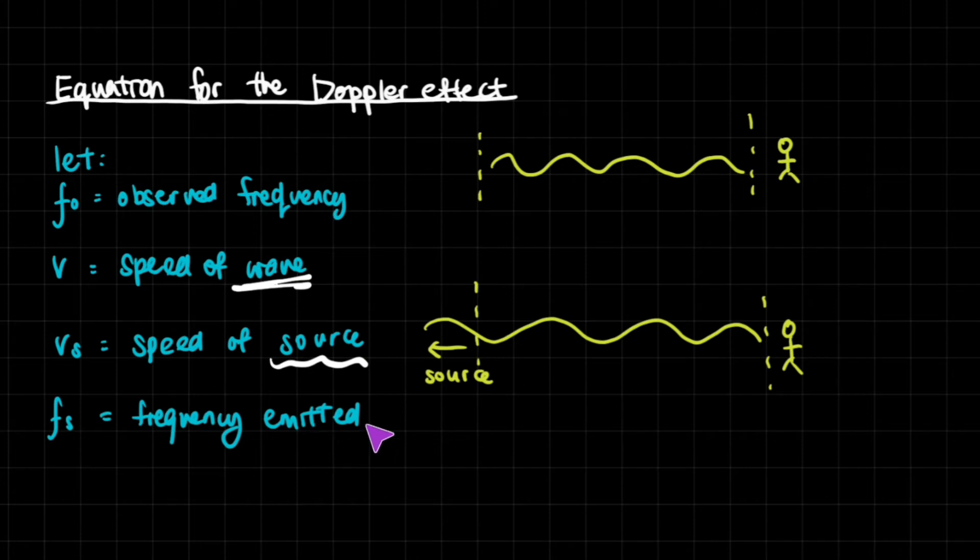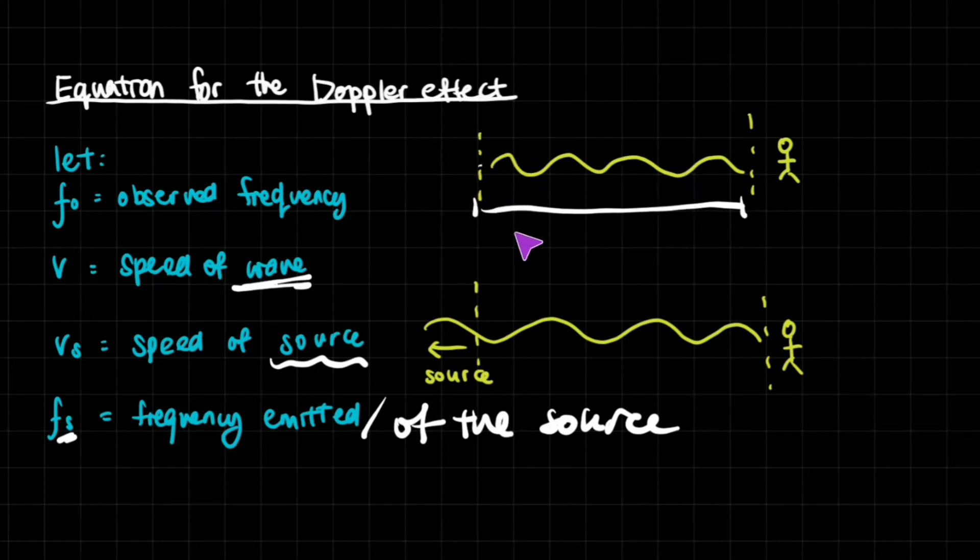V_S is going to be the speed of the source, and then F_S is going to be the frequency emitted or the frequency of the source. So the S will represent the source.